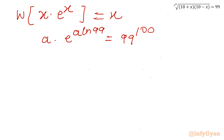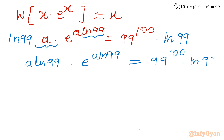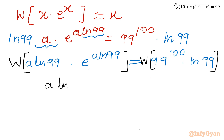Now if we apply Lambert W directly, ln 99 is missing — everything is matching but ln 99 is not present. So let us multiply both sides by ln 99. This gives us a ln 99 times e raised to the power (a ln 99) on the left. Right hand side becomes 99 to the power 100 times ln 99. Now let us apply the Lambert W function to both sides, giving us a ln 99 on the left and Lambert W of (99 to the power 100 times ln 99) on the right.